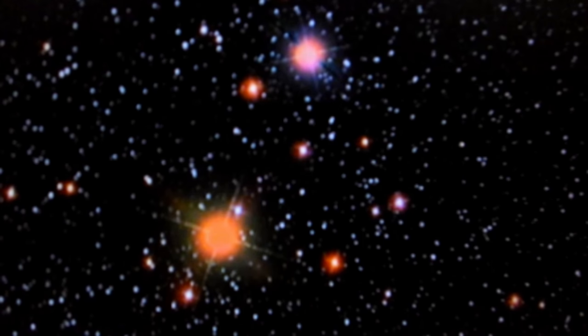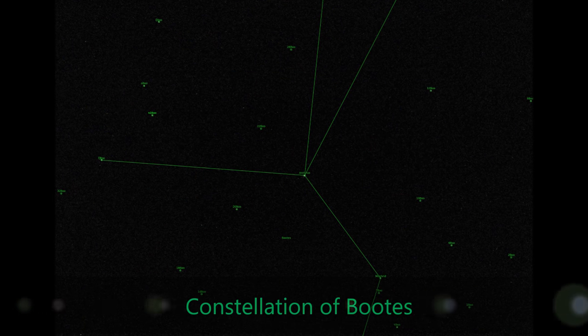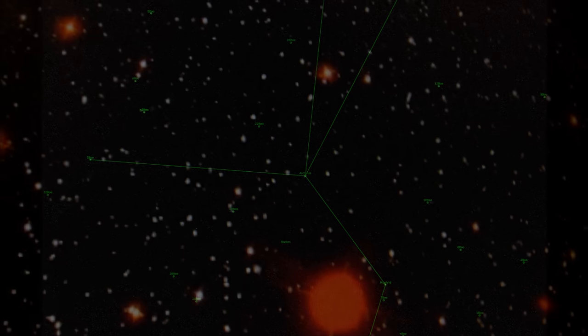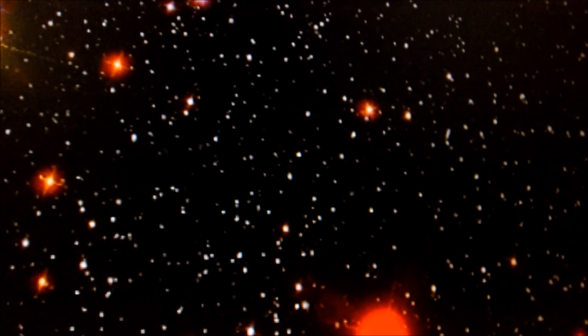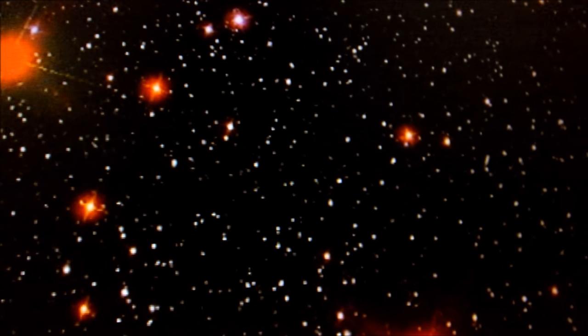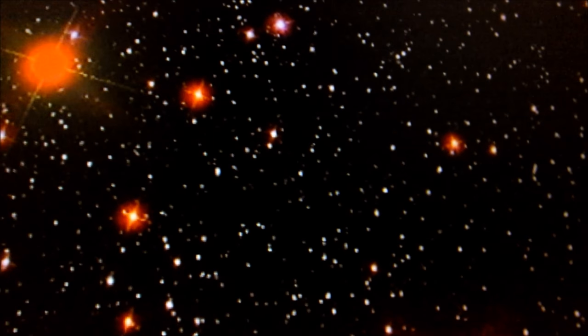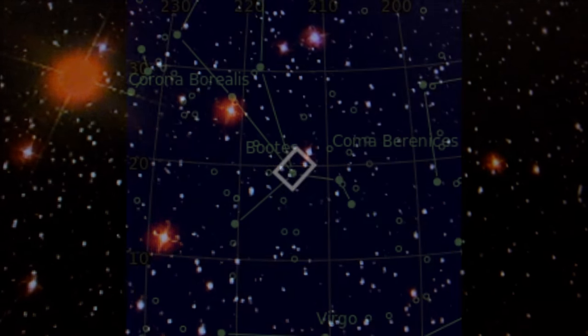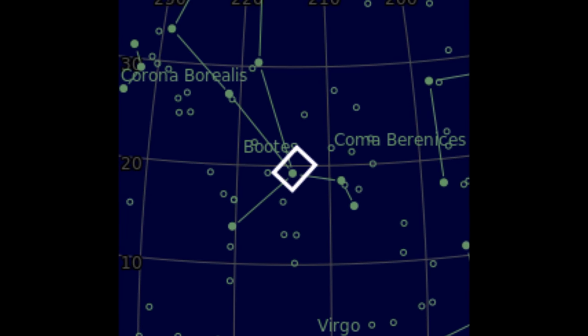The name refers to Arcturus' proximity to Ursa Major and Ursa Minor, the great bear and the lesser bear. Arcturus' name appears in Greek literature at least as far back as the time of Hesiod, who wrote about the star in his book, Works and Days.